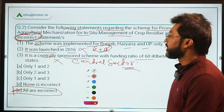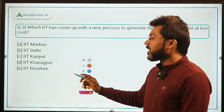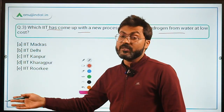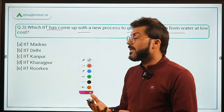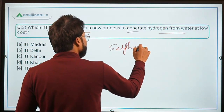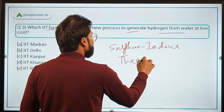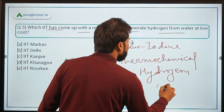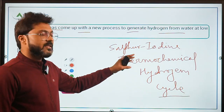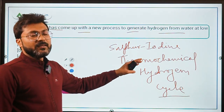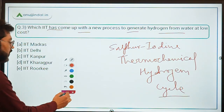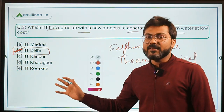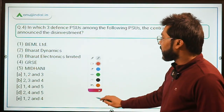Question three, which can be asked as a one-marker: which IIT has developed a new process to generate hydrogen from water at low cost? The process is called the Sulfur-Iodine Thermochemical Hydrogen Cycle. You don't need to go into the details of the process — just remember its name. This was developed by researchers at IIT Delhi, so option B — IIT Delhi — is the correct answer.